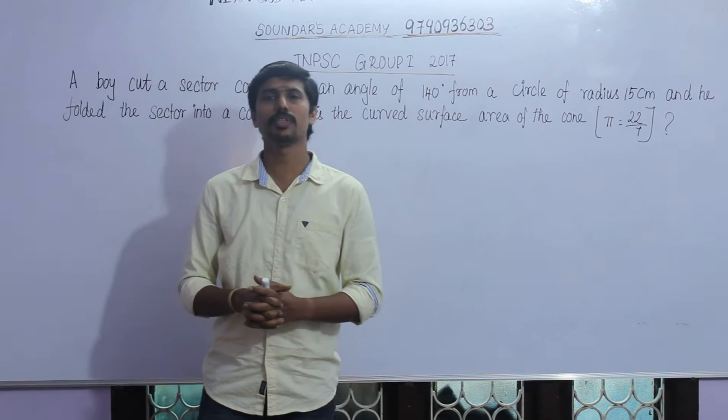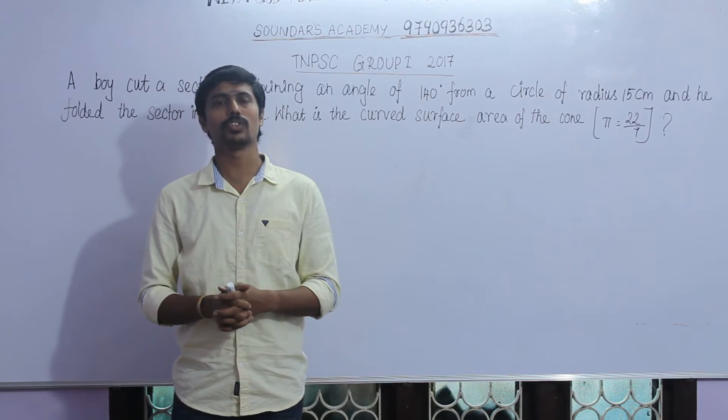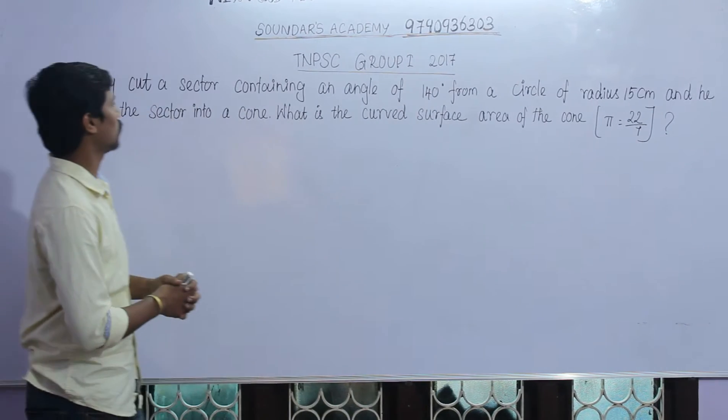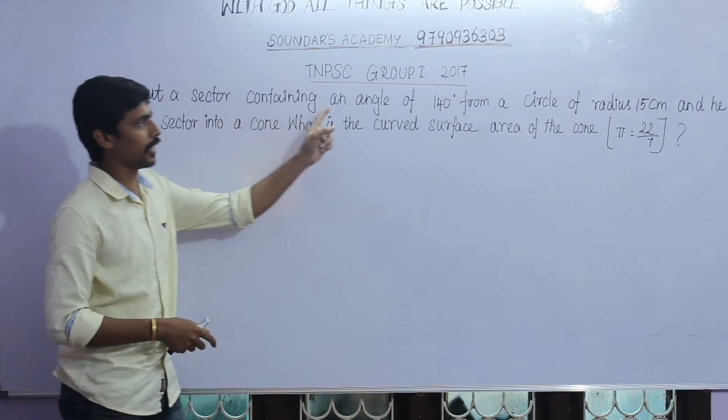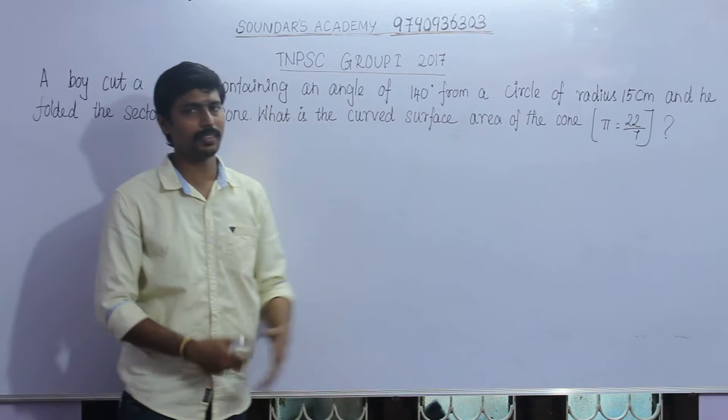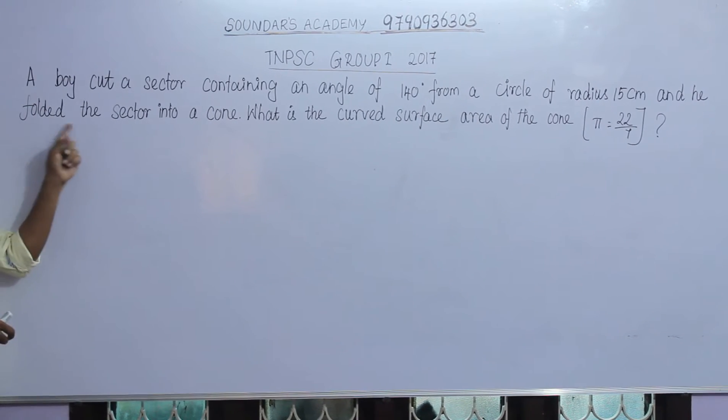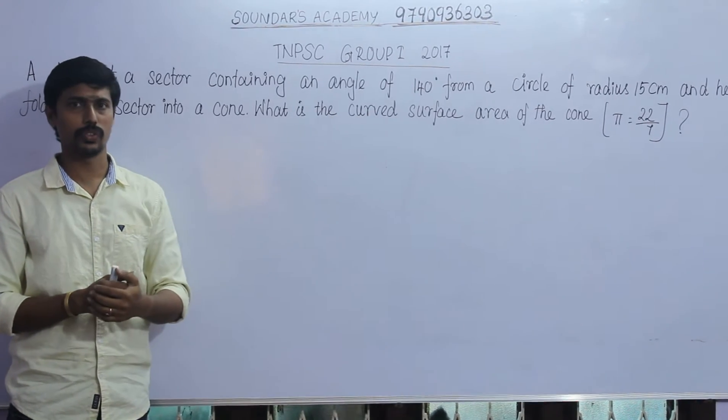Hi everyone. February 2017 Group 1 Examination is at the end of the day. So I am going to ask you a question about: A boy cut a sector containing an angle of 140 degrees from a circle of radius 15 cm and he folded the sector into a cone. What is the curved surface area of the cone?